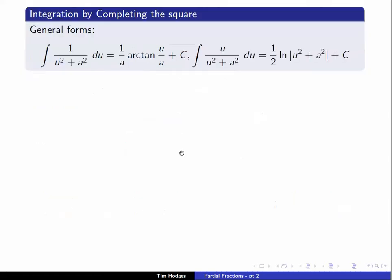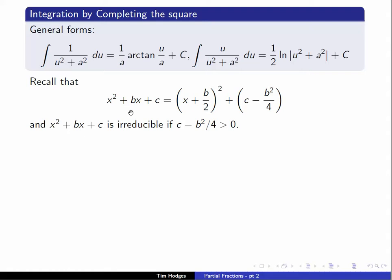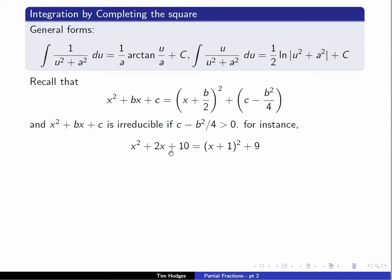Recall this formula from high school algebra: x squared plus bx plus c equals (x plus b/2) squared plus (c minus b squared over 4). We pick b/2 so that when we expand, the x term is bx and the x squared term is x squared. We then subtract b squared over 4 from the constant term to get back to c. This polynomial is irreducible if c minus b squared over 4 is positive. For instance, x squared plus 2x plus 10 gives (x plus 1) squared plus 9.